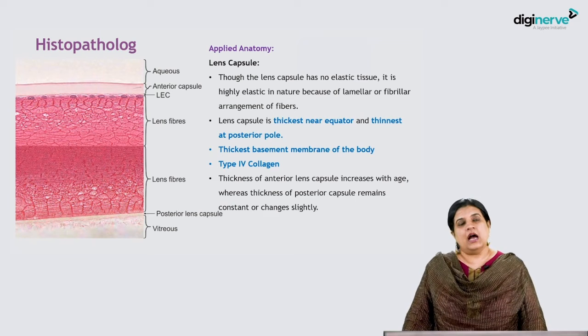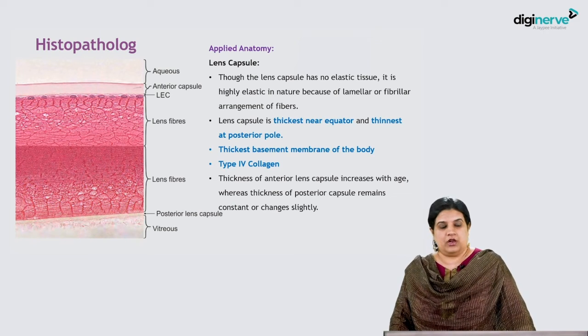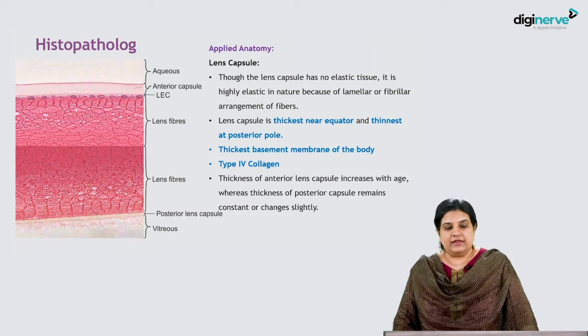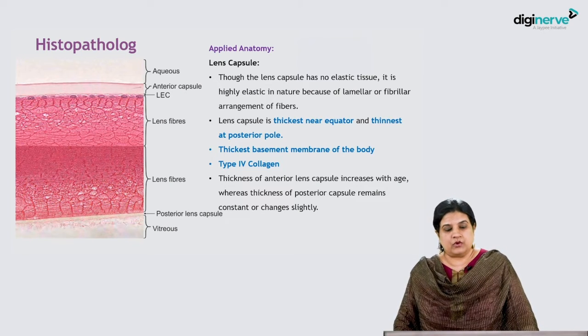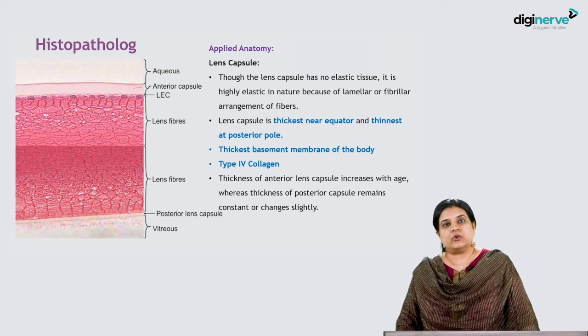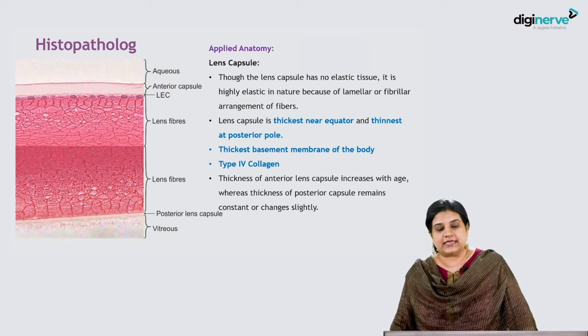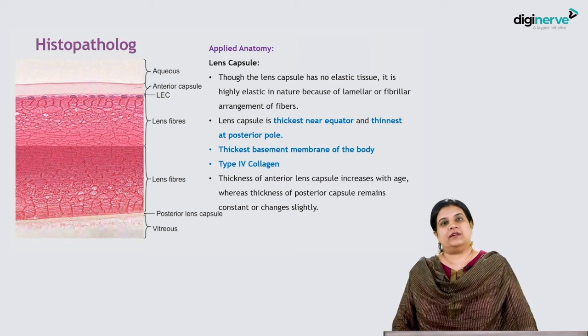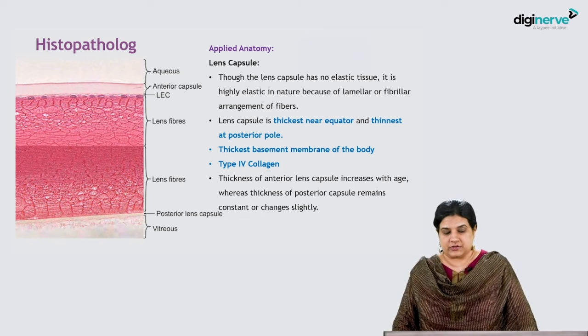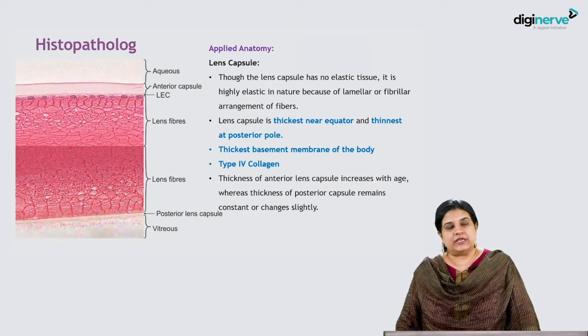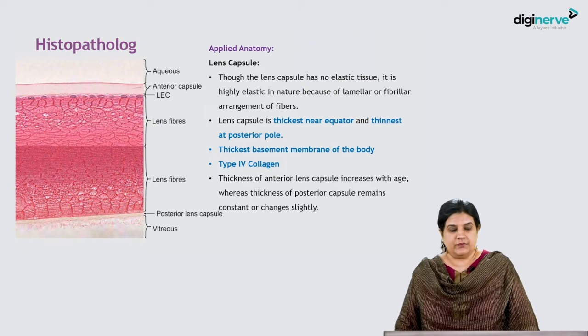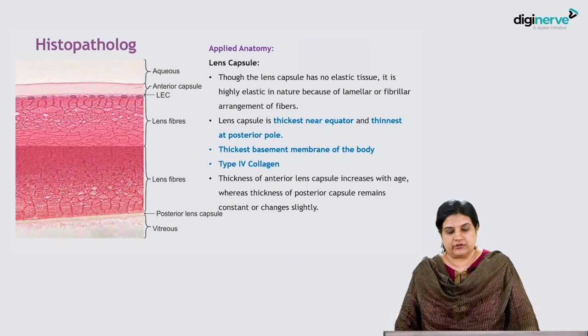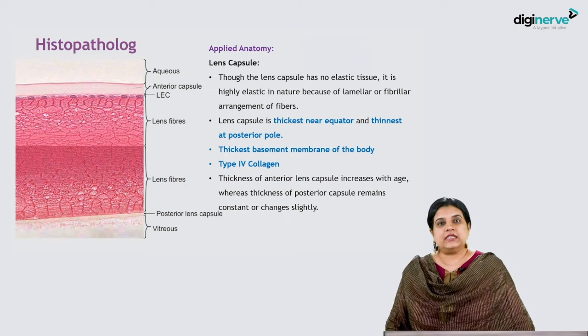Let's look at the histopathology of the lens. The lens has a capsule. Although the lens capsule has no elastic tissue, it is highly elastic in nature because of the lamellar or fibrillar arrangement of lens fibers. The capsule is thickest near the equator and thinnest at the posterior pole.